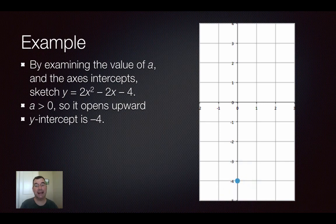We know that the y-intercept is negative 4. We can do that by replacing every x with 0, and so we would get y equals 0 minus 0 minus 4, so that's negative 4.